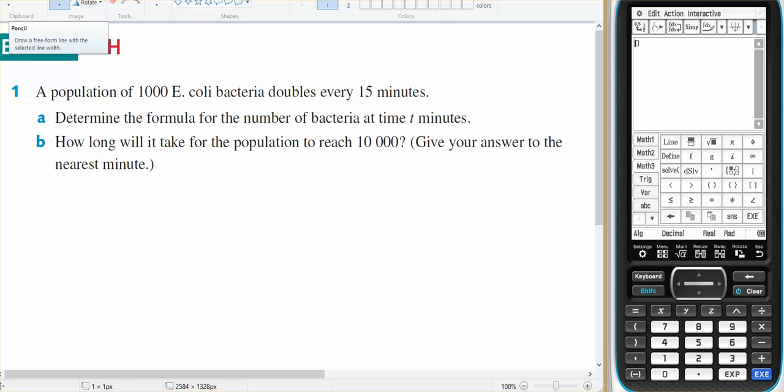This is for Year 11 Methods, it's 13H, question number 1. Population of 1,000 E. coli bacteria doubles every 15 minutes. Determine a formula for the number of bacteria at time t.